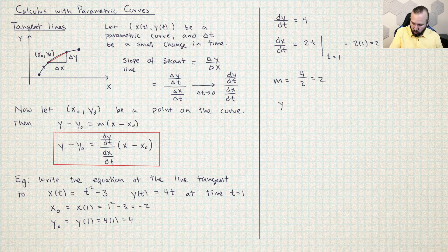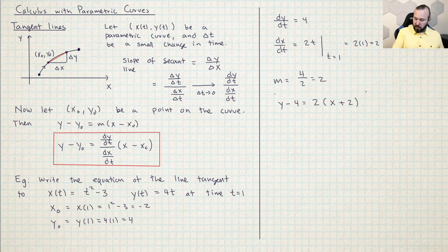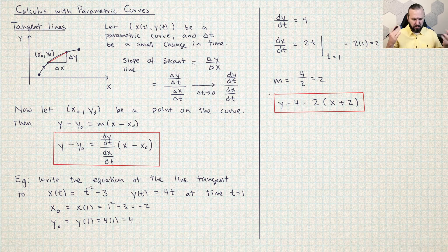So y minus y₀ equals m times x minus x₀, and that's it — we wrote the equation of the tangent line. Hopefully you can see that it's really not much of a step further than writing the equation of a tangent line for functions that are defined explicitly.